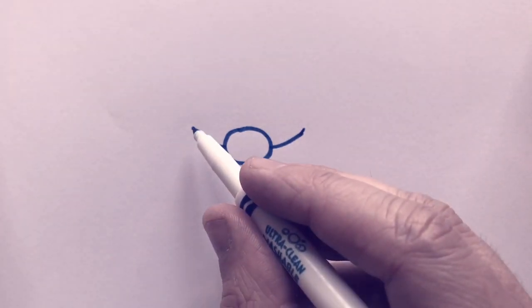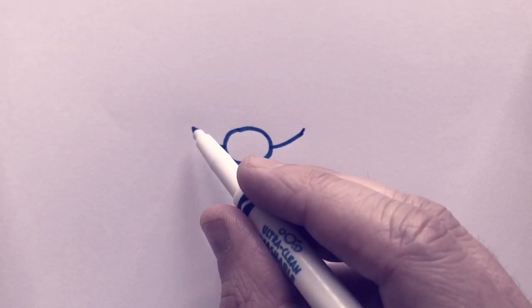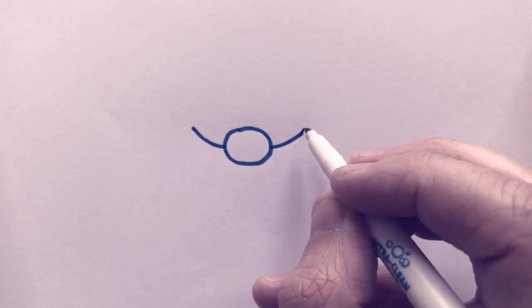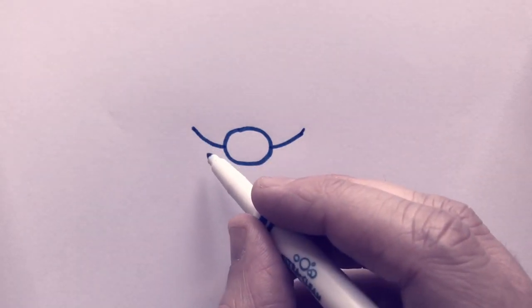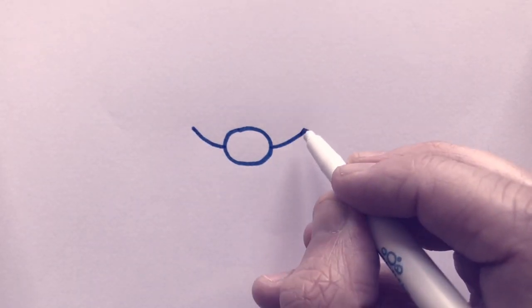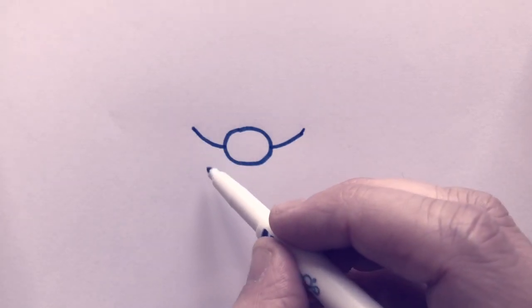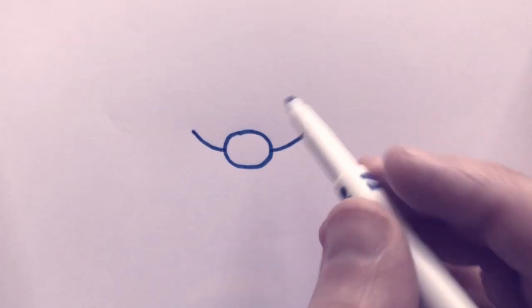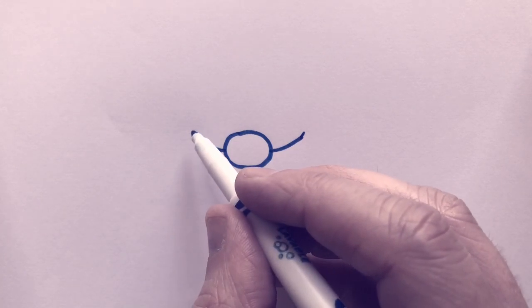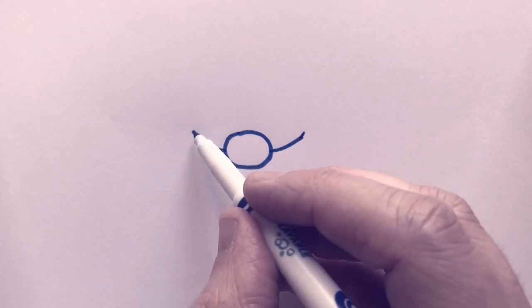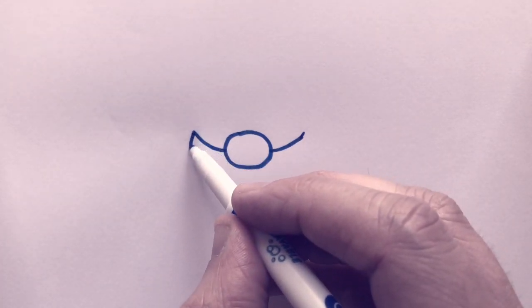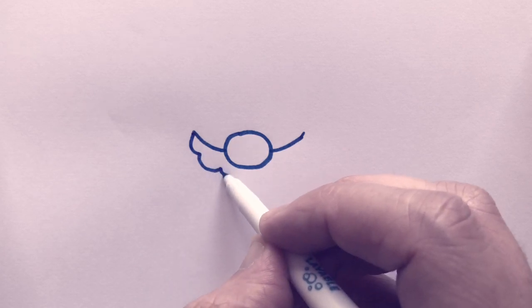Now we're going to do a line that connects from here to here, and it's going to go right under the nose, except it's going to have bumps on it. There's not going to be a billion bumps, there's probably going to be about five or six. We're going to do it nice and slow: one, two, three, four, five, six.